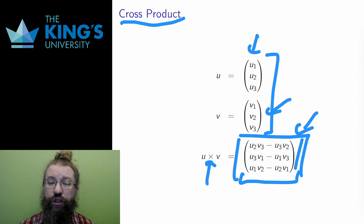Of note, in the first entry of the cross product, only the second and third coefficients of the originals are in use, and similarly for the next two entries.